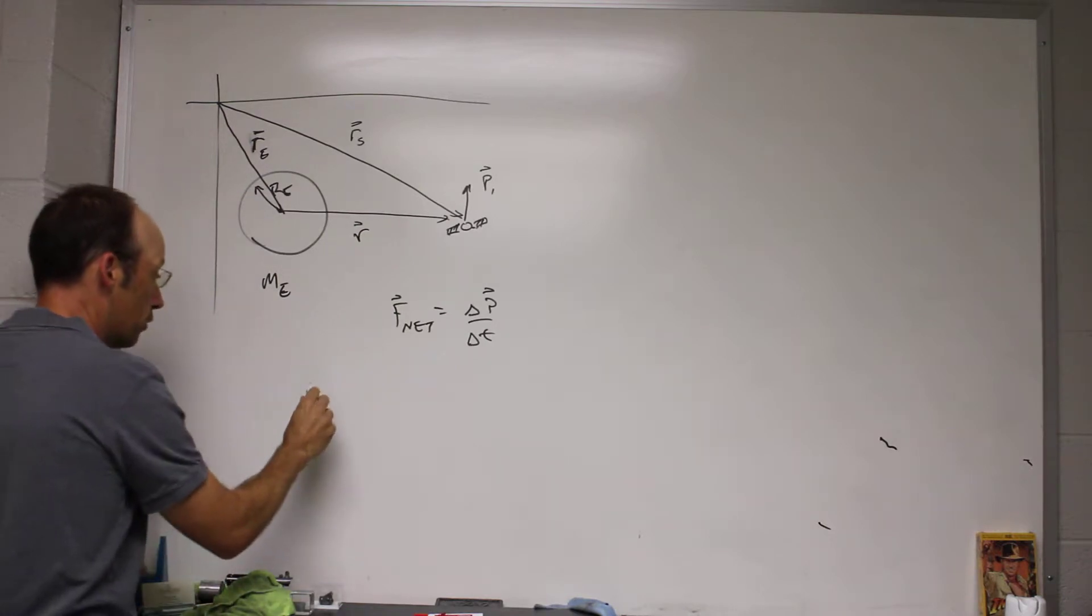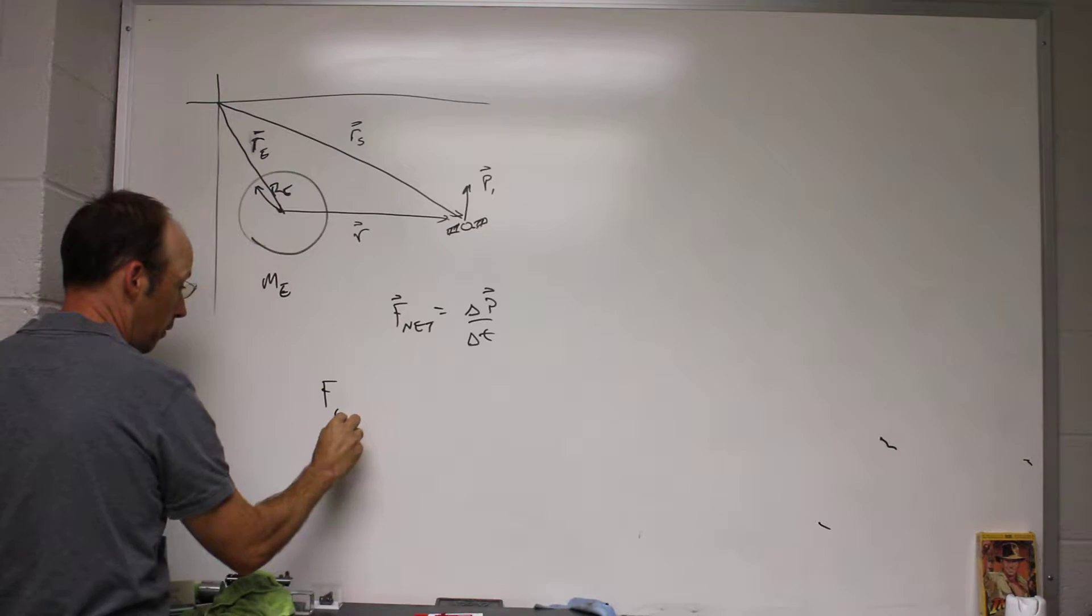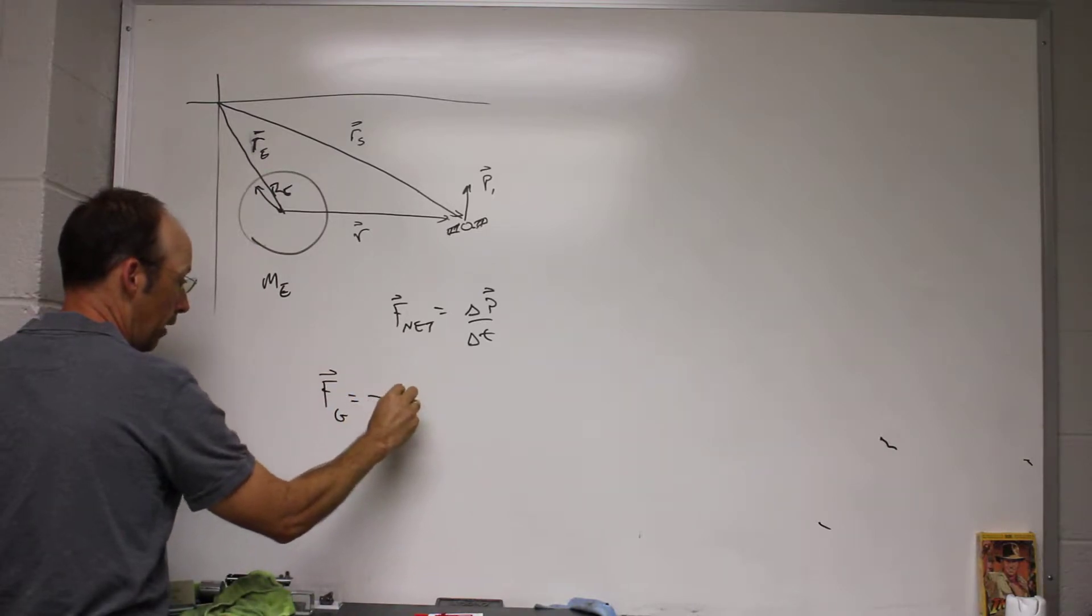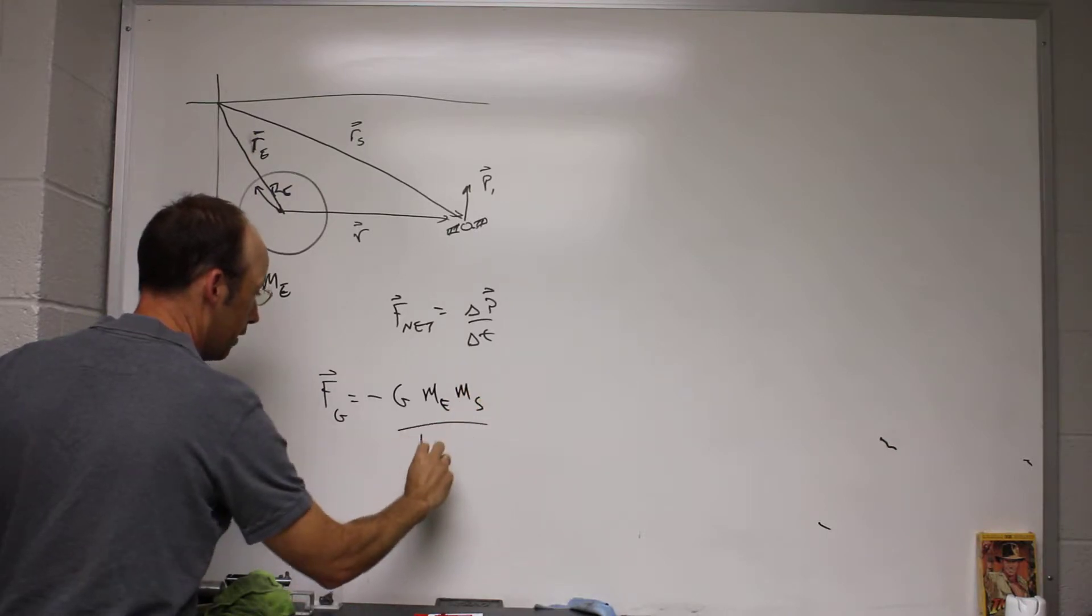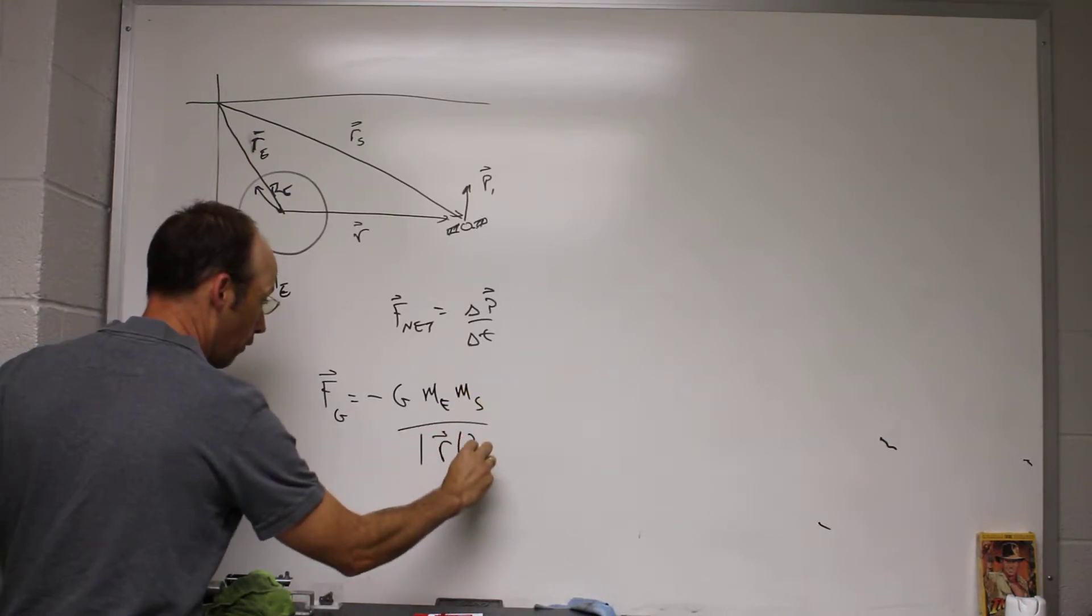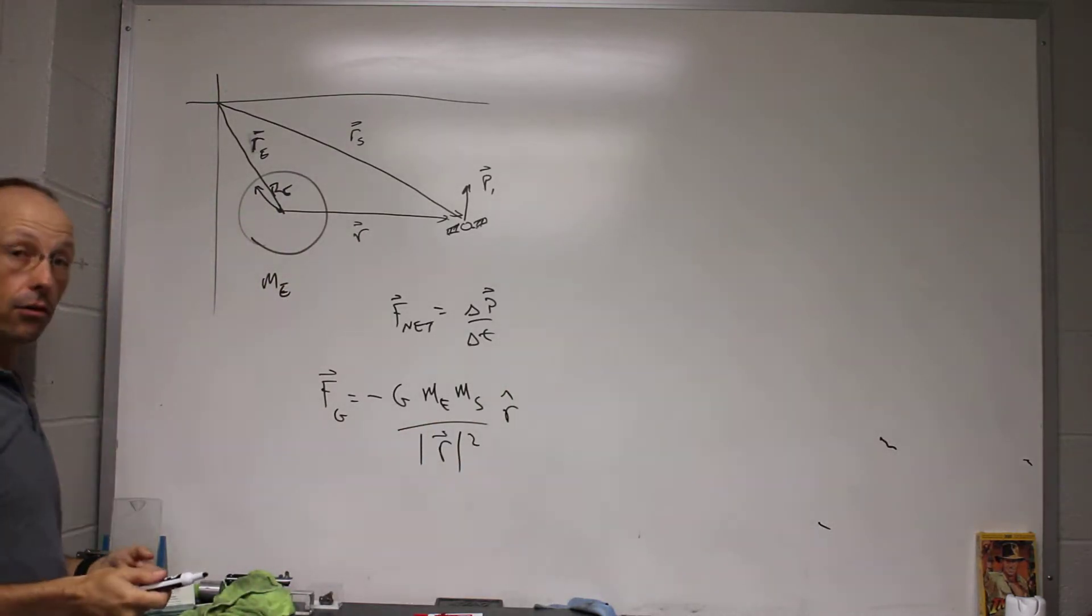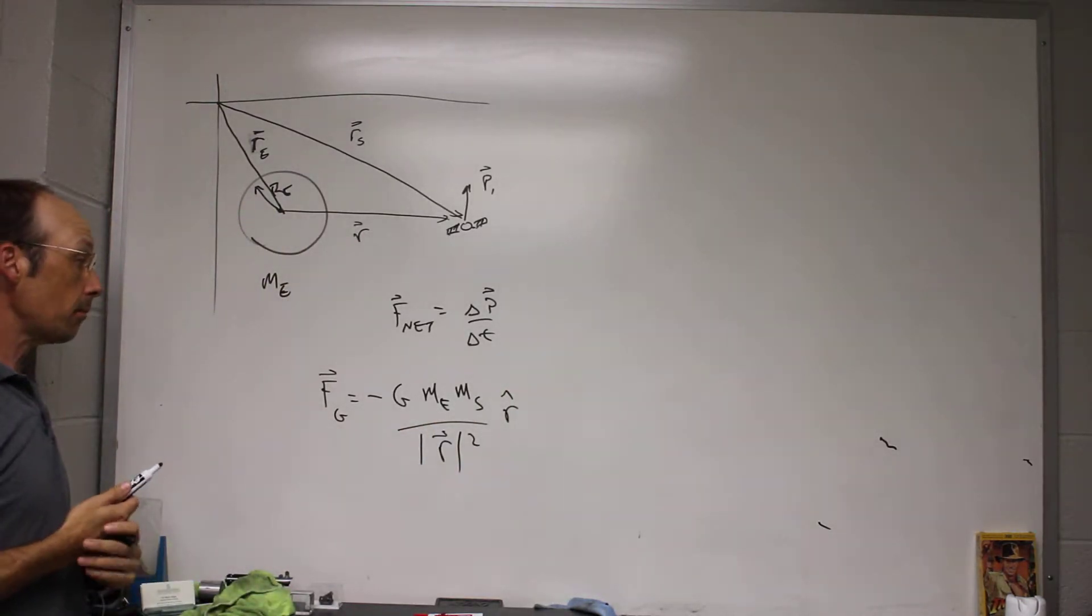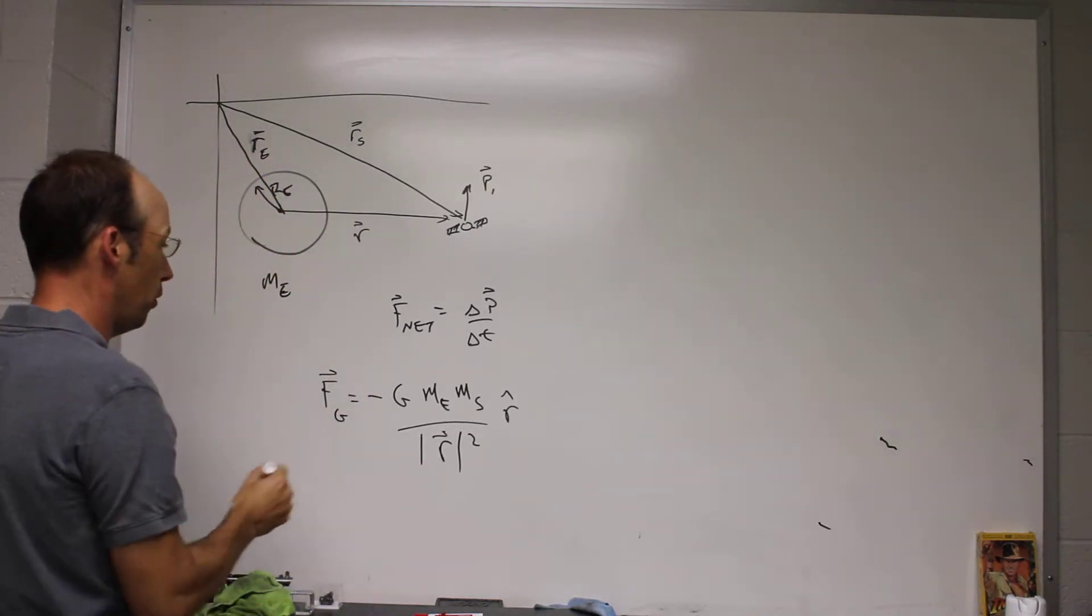And if I do that, then the gravitational force on the satellite is going to be FG is negative G, mass of the Earth, mass of the satellite, over the distance between them squared, the magnitude of R squared. Then I have to multiply by R hat, because I need to use this as a vector. If I don't, I can't do the momentum principle as a vector, right? So this is what I'm going to do.